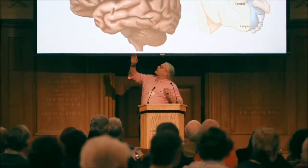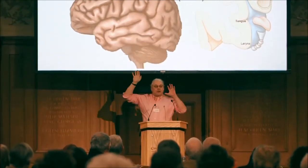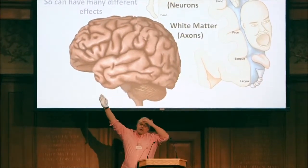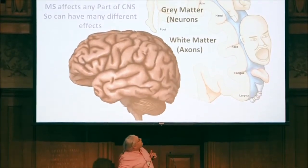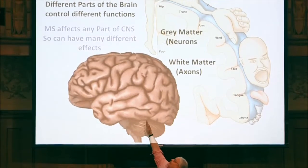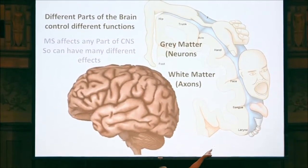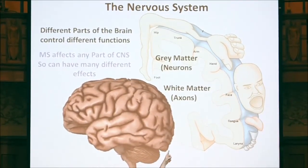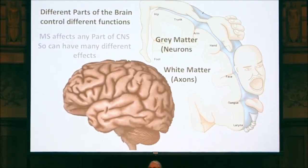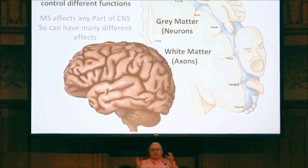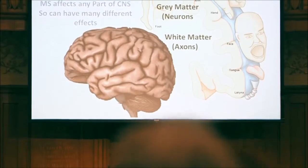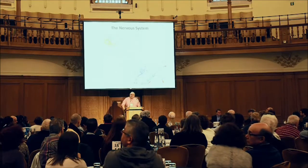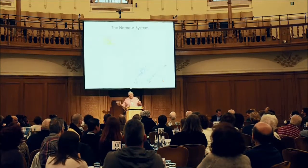The brain is a very complex organ and different parts control different functions. The cerebellum controls balance and movement; another area is where your vision is processed; the more emotional areas are at the front of the brain. If we take a slice of the brain, you can see that if MS affects the bottom it may be affecting your tongue, and a lesion a bit further up could be affecting your hand. This is why MS can do so many different things — it depends on where MS attacks the nervous system.